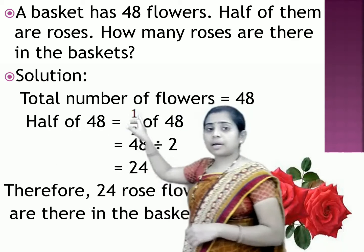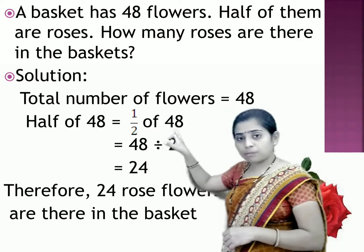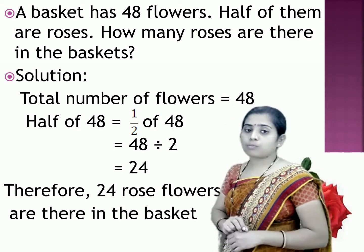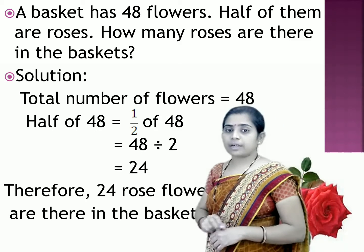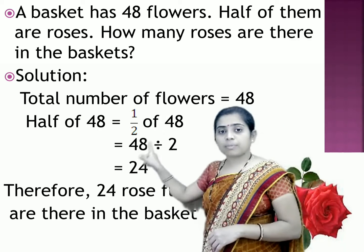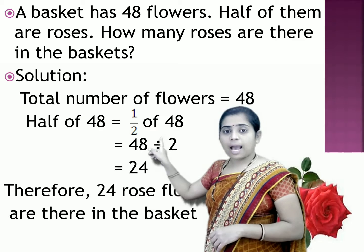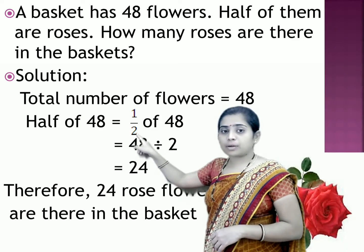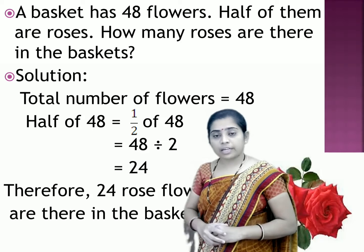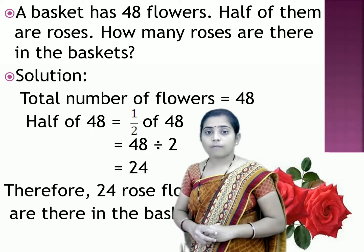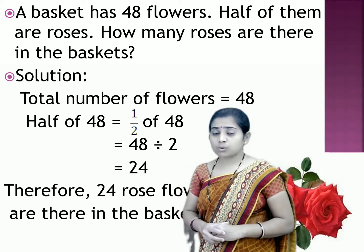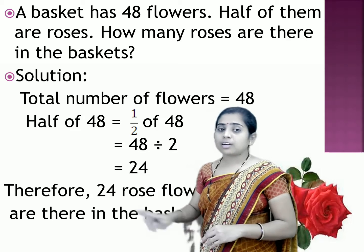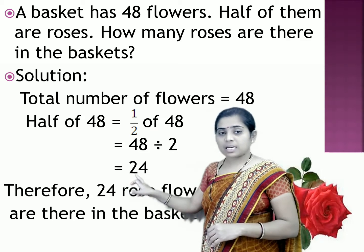Half means 1 by 2 of 48. To find out half of 48, we need to divide 48 by 2, as 2 is the denominator in 1 by 2. After dividing 48 by 2, we will get 24 as the quotient and 0 as the remainder.